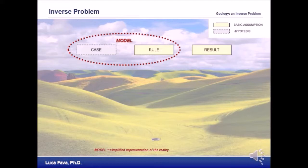A model is a simplified representation of the reality, and is a combination of a rule, or a set of rules, and some initial conditions, the parameters.